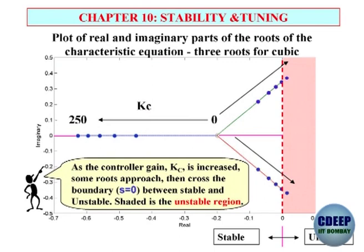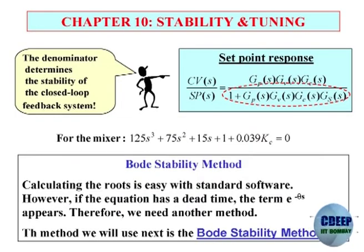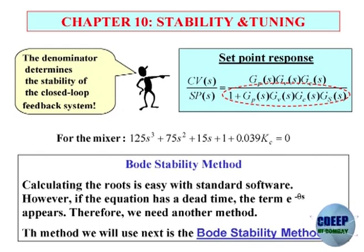This diagram shows how the roots approach the imaginary axis as gain is increased, then cross into the right half plane — the unstable shaded region — as you play with gain. For the mixer, this is the characteristic equation; you can determine the Ziegler-Nichols K_c from this. The problem with this approach is: what is it based on? It is based on determining the roots of the characteristic equation, which is a polynomial. You can find the roots of a polynomial and determine values of K_c that make the equation equal to zero.